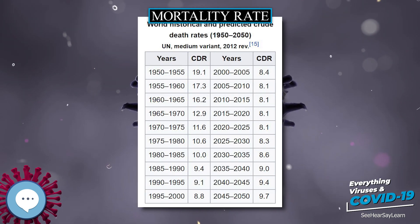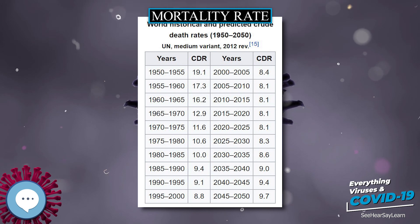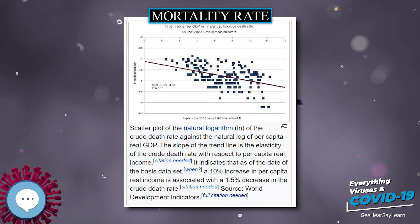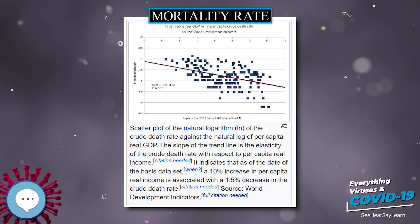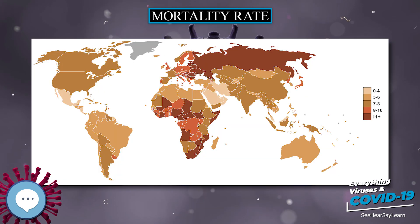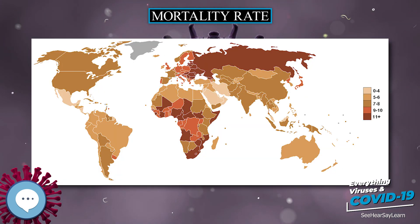Data shows that after the age of 5, these preventable causes level out between high- and low-income countries. The only cause of death that affects people aged 30 to 59 at a significantly higher rate remains concentrated in low-income countries.